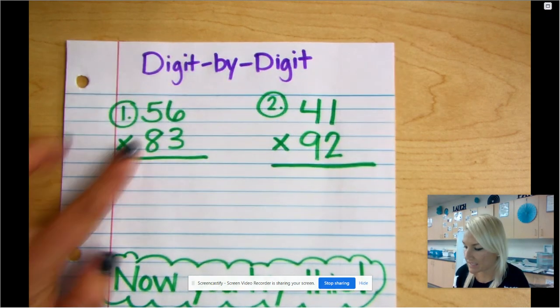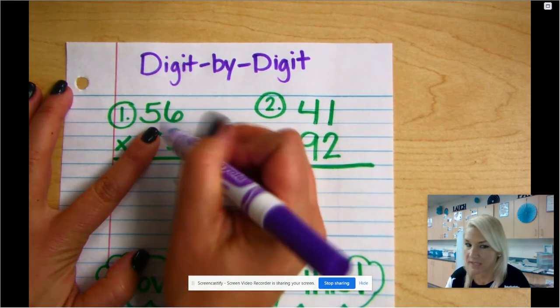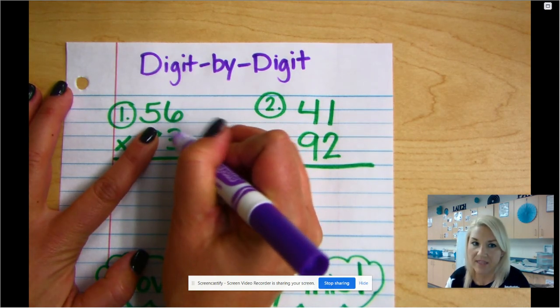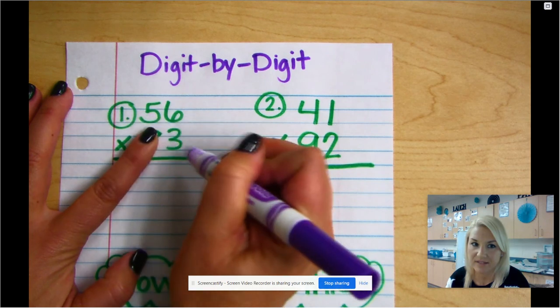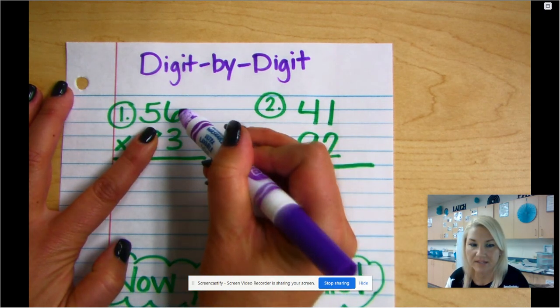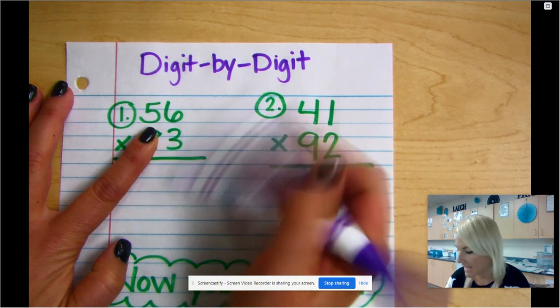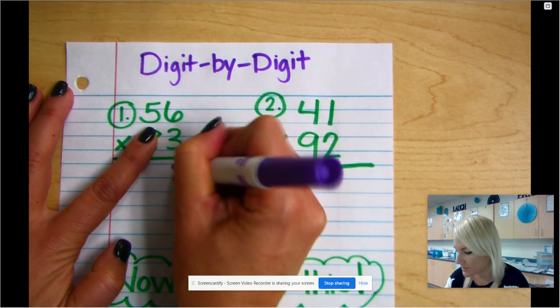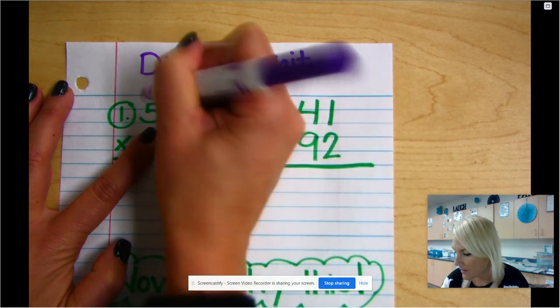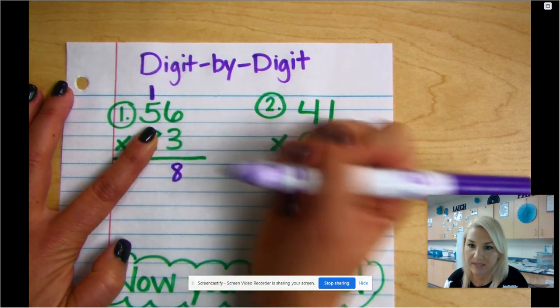So I'm gonna go ahead and model number one. I always like to pretend that this isn't here because we're gonna start in the ones place and multiply the ones, then we multiply the tens. So my first step is to multiply 3 times 6, and 3 times 6 is 18. So my 8 is gonna go down just like we did in 3 by 1 and 4 by 1 digits, and my 1 is gonna get carried over into the next place value.